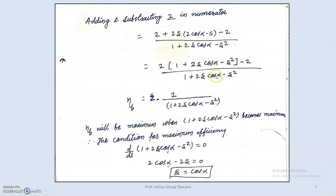Efficiency will be maximum when the term 2 divided by (1 + 2s cos alpha − s squared) is minimum, which happens when the denominator is maximum. Differentiating (1 + 2s cos alpha − s squared) with respect to s and equating to zero: 2 cos alpha − 2s = 0, which gives s equals cos alpha.